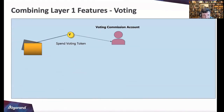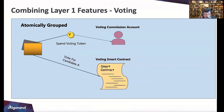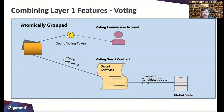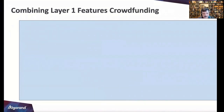Here's an architectural diagram combining layer one features for the voting example. You've got a voting commission and a voting token, all atomically grouped — this all has to work or none of it works. You vote for candidate A; it goes through a smart contract for validation. If everything is validated and legit, it increments the candidate A total in global state on the blockchain.